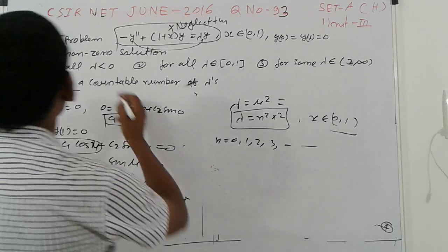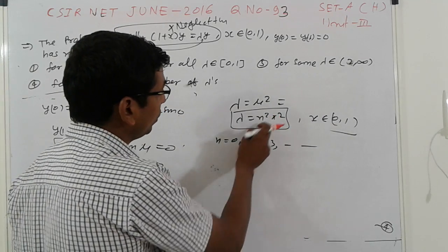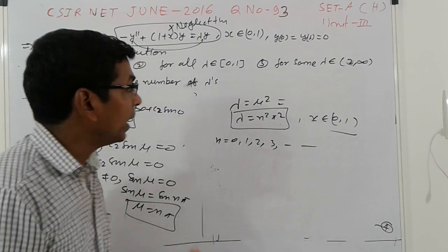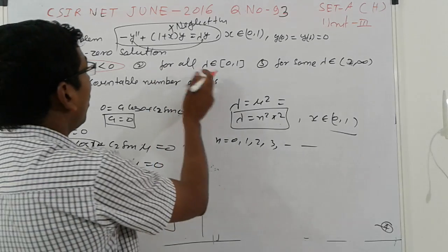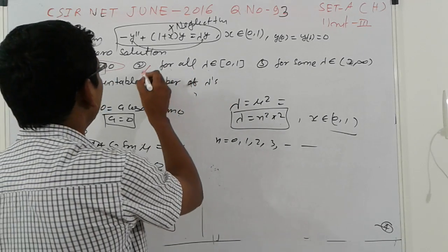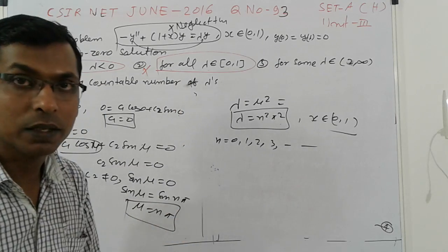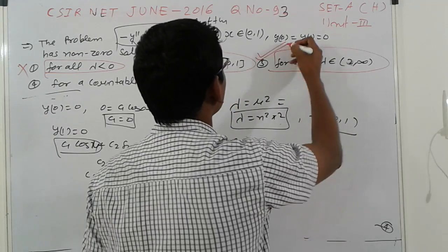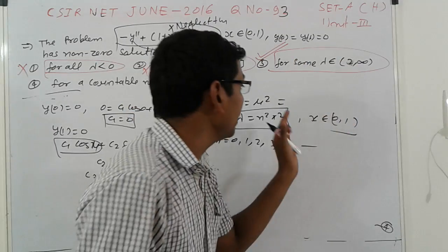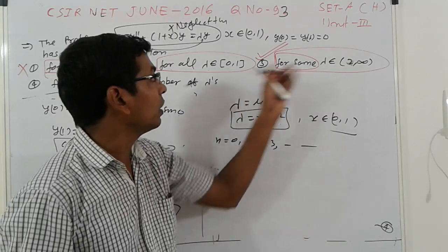Now checking the options: Option A says 'for all λ < 0' — that is wrong because our eigenvalues are positive. Option B says 'for all λ in (0,1)' — also wrong, because π² is greater than 1 and our eigenvalues don't all lie in (0,1). Option C says 'for some values of λ in [2, ∞)' — this is correct, since the eigenvalues are n²π², which do lie in that range for n ≥ 1. Option D notes that the eigenvalues form a countable set — this is also a correct general observation, making option C the correct answer.